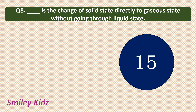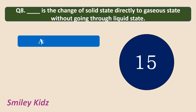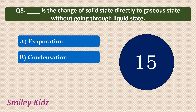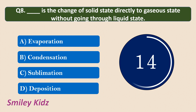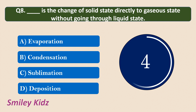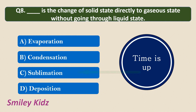Question number 8: Dash is the change of solid state directly to the gaseous state without going through liquid state. Options are: Evaporation, Condensation, Sublimation, Deposition. Your time starts now. Your time is up. The correct answer is Sublimation. Sublimation is the change of solid state directly to the gaseous state without going through the liquid state.